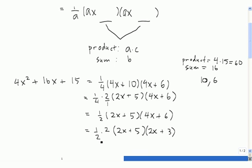The final step is to multiply 1 half times 2. So 1 half times 2 over 1 is 2 divided by 2, or just 1. So this is equal to 1 times 2x plus 5 times 2x plus 3.